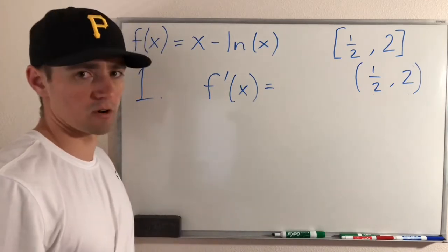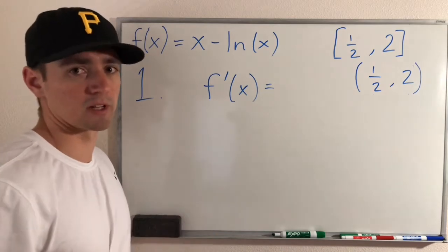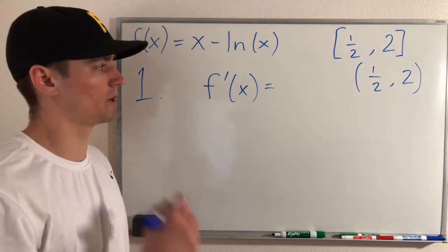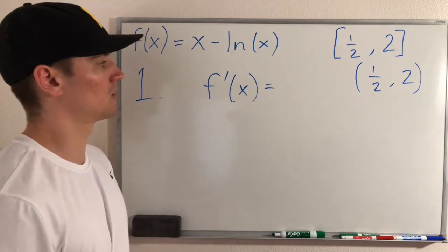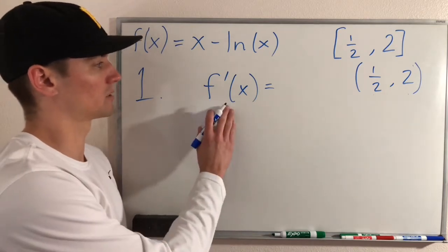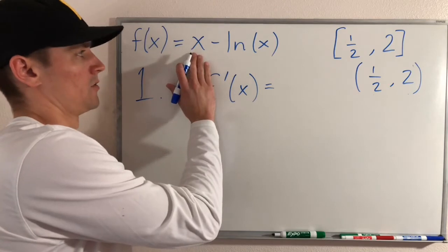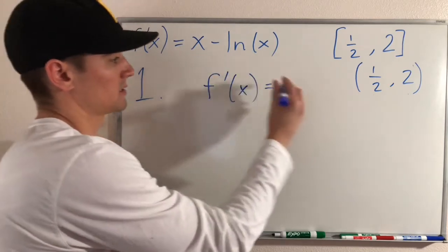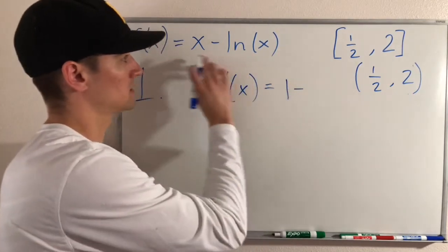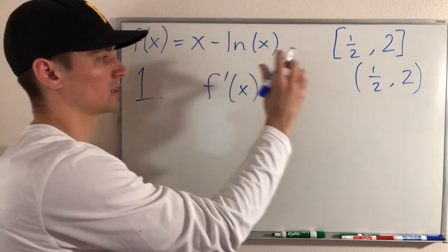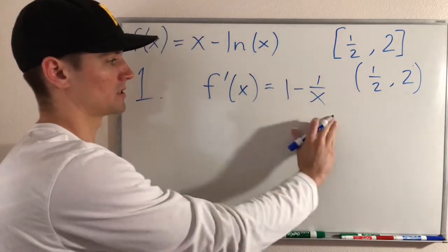I do have a video on finding critical numbers — I'll link to it if you want to check that out. We need to find the derivative of f of x first. The derivative of x is just one, and then minus the derivative of ln of x, which is one over x. So f prime of x equals one minus one over x.